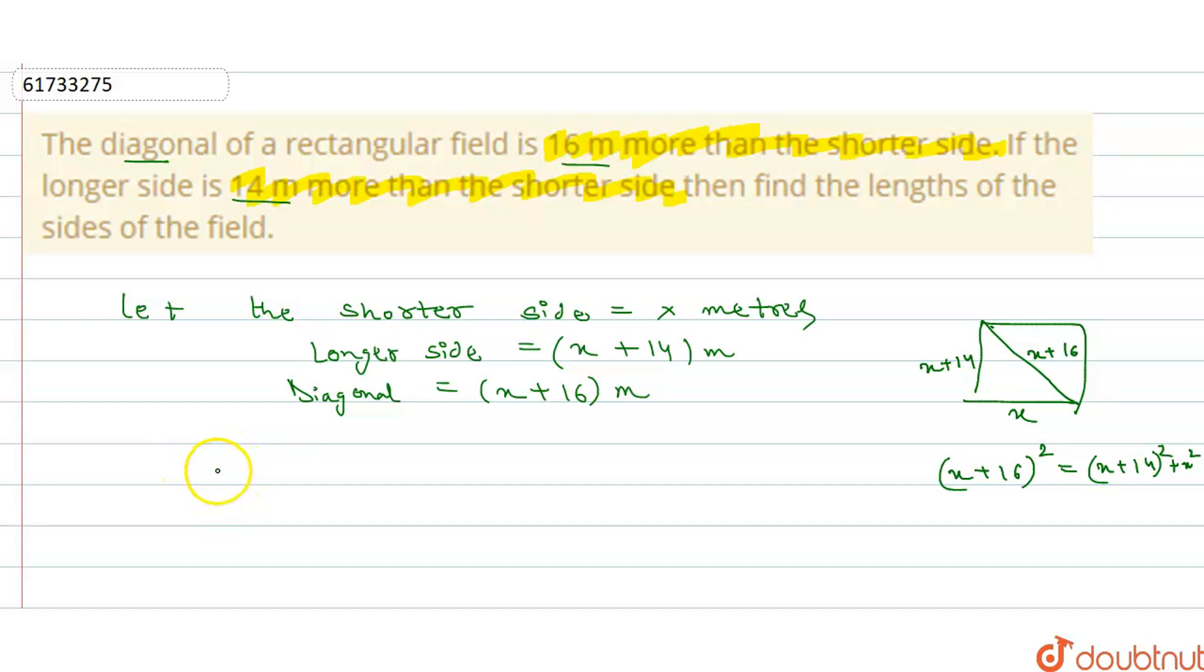So using Pythagorean theorem, x plus 16 whole square minus x plus 14 whole square equals to x square. So here we can put a plus b whole square identity and solve this. So what will happen here? x square plus 16 square plus 256 plus 2ab so 2 into 16 is 32, so 32x.